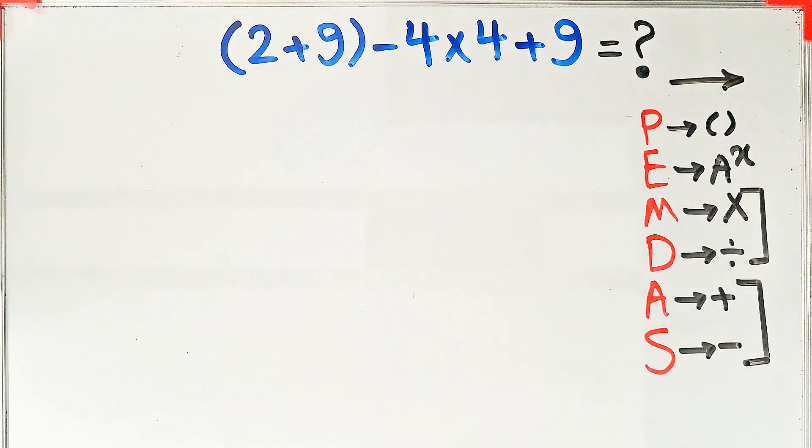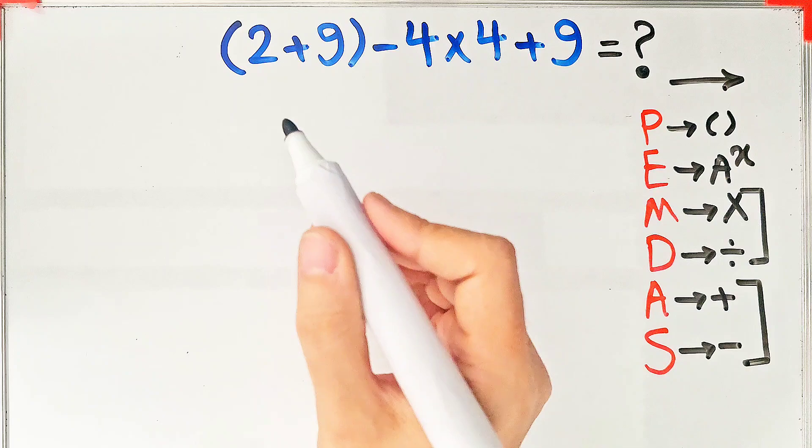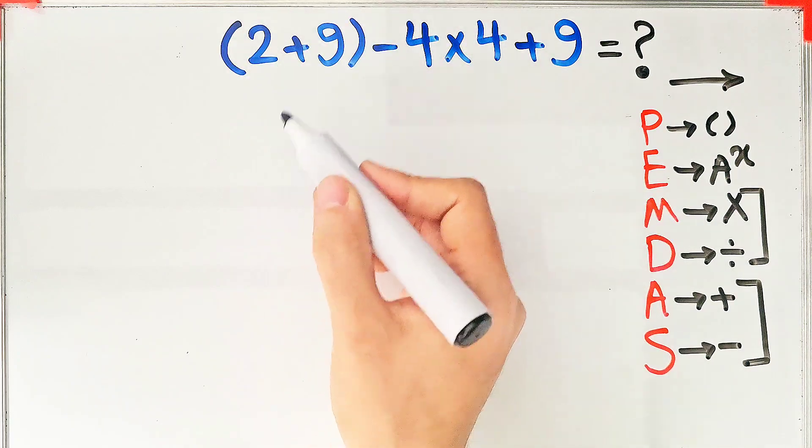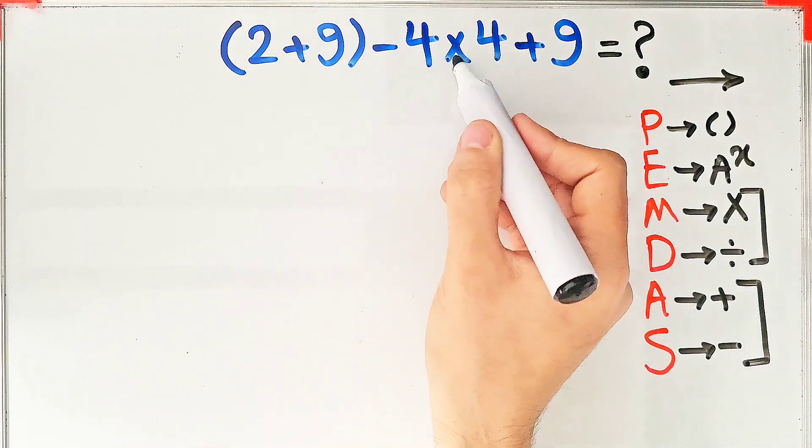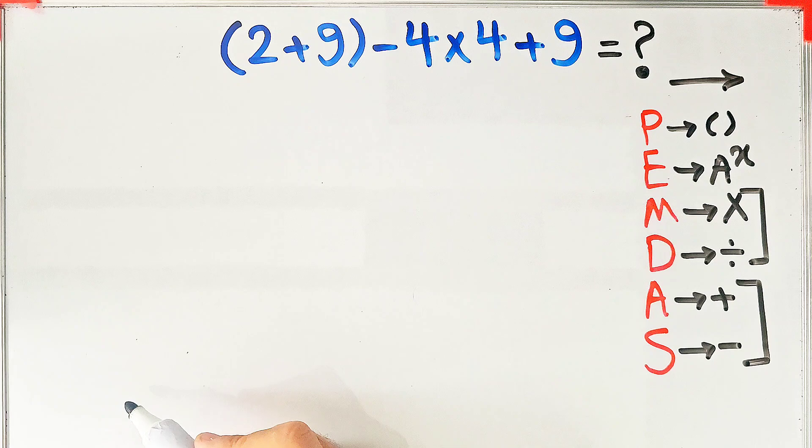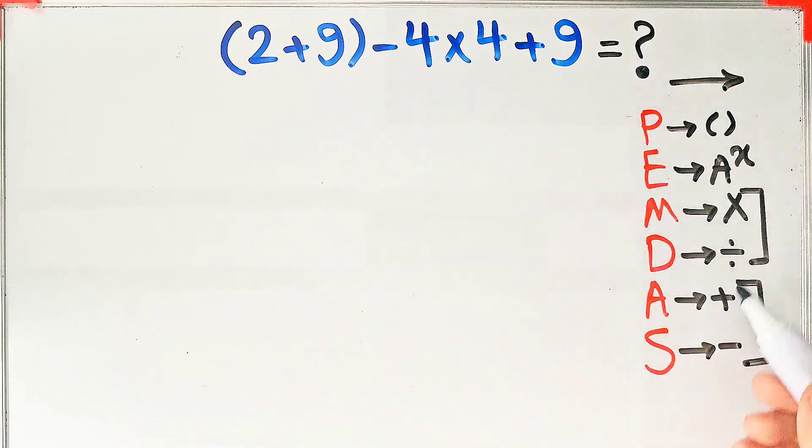In this question we have parentheses, addition, subtraction, and multiplication. According to the PEMDAS rule, first we simplify the parentheses.